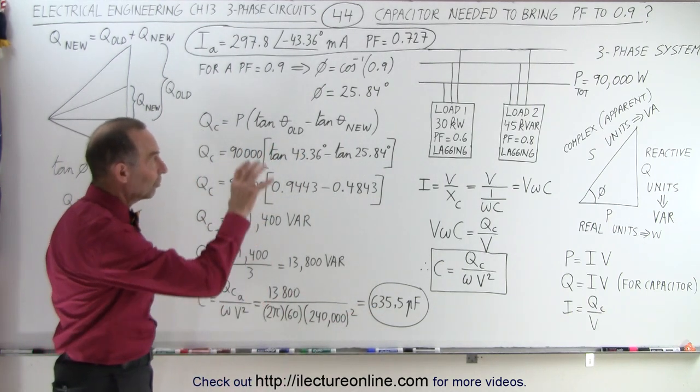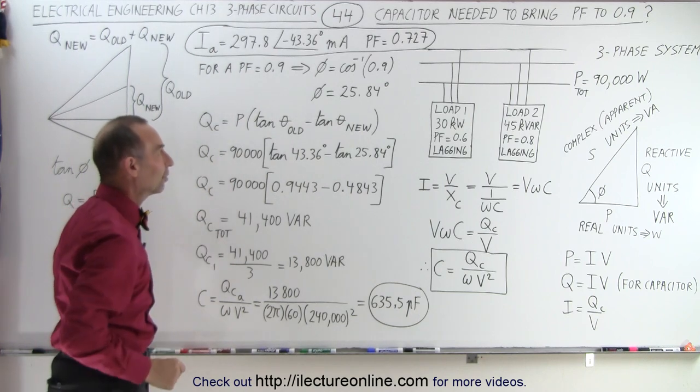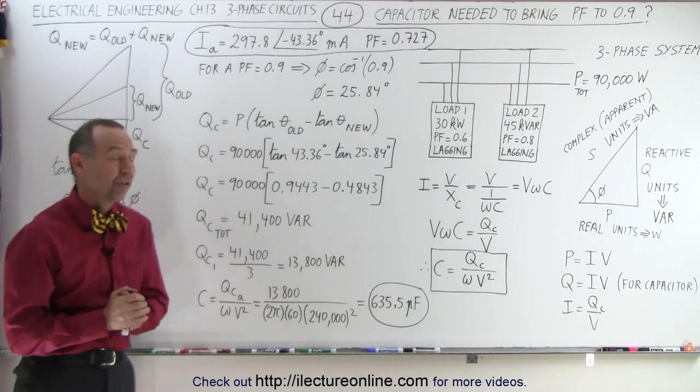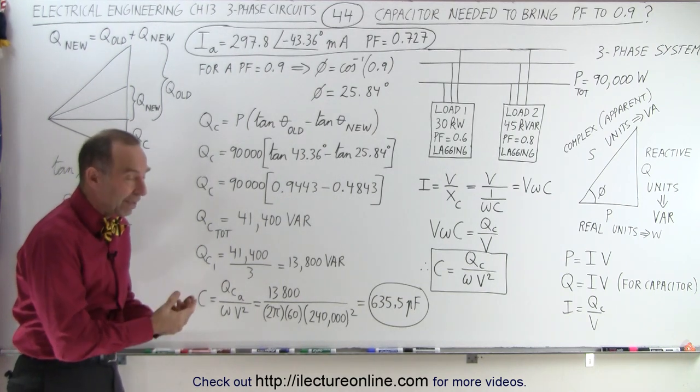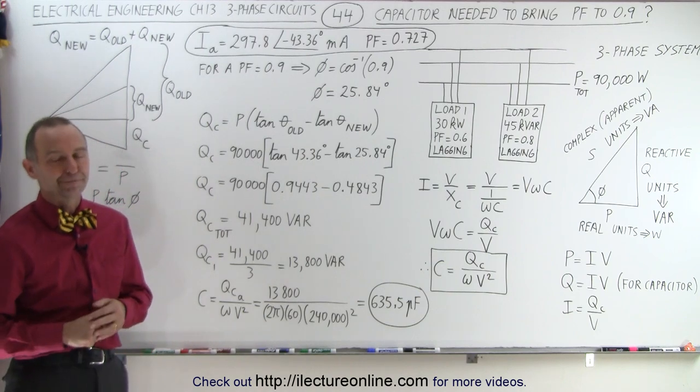If we add that capacitance to the three-phase system, we will increase the power factor from 0.727 to 0.9, and that's the methodology we use to find what capacitor we need to add to the circuit to get the power factor we want. That is how it's done.